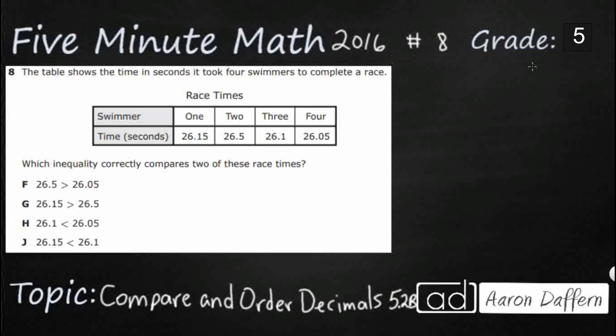Hello and welcome to 5-Minute Math. Today we are looking at the fifth grade concept of comparing and ordering decimals. This is standard 5.2b in the great state of Texas and we are using item number 8 of the 2016 released STAAR test.